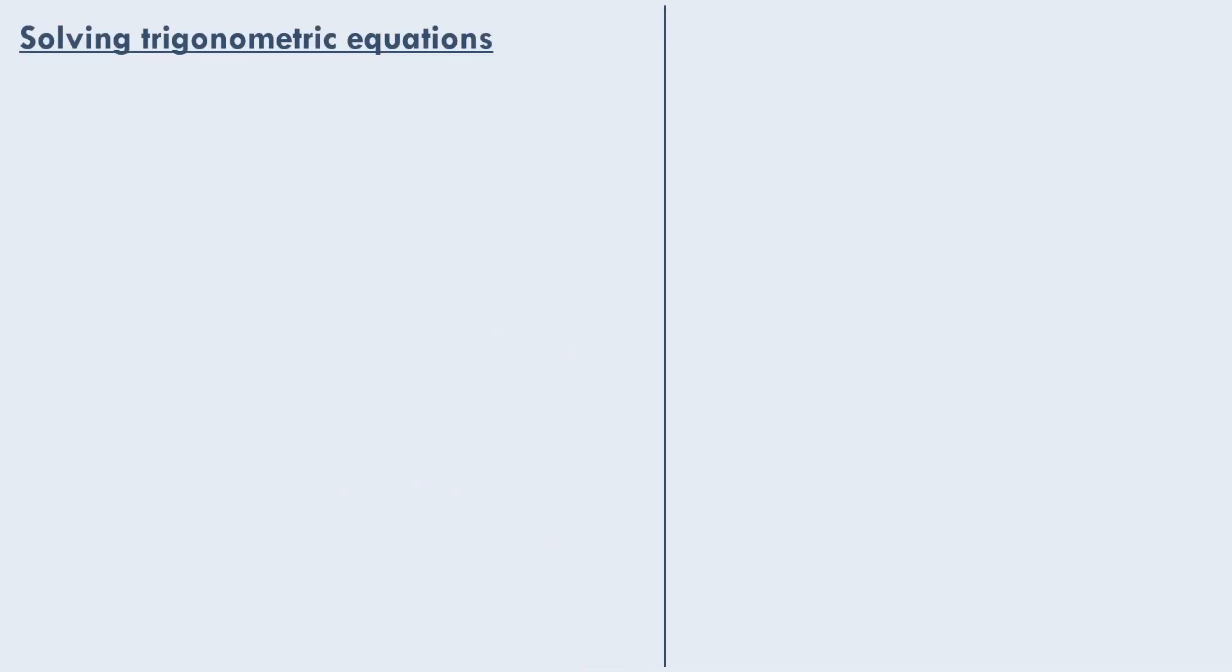Finally we have solving trigonometric equations. First of all a recap of what your trig functions look like. Here we have sine from 0 to 360, here we have cos from 0 to 360, and finally tan has asymptotes so tan looks something like this from 0 to 360.